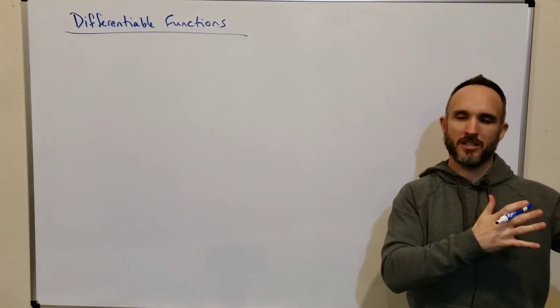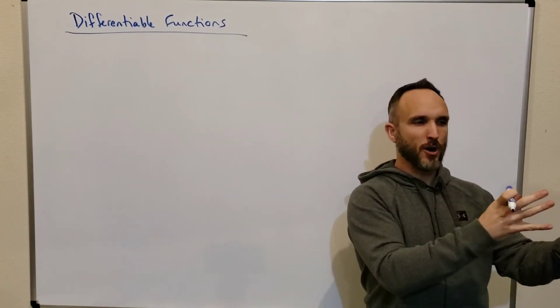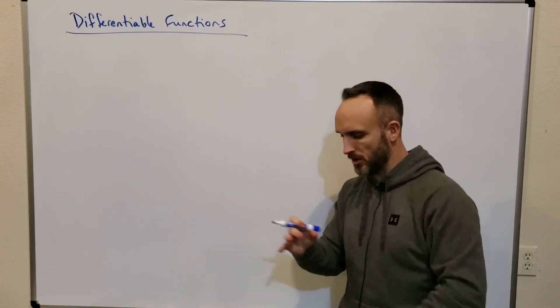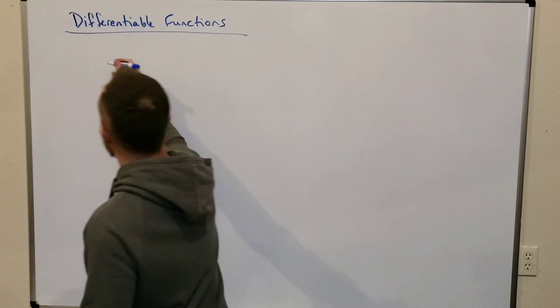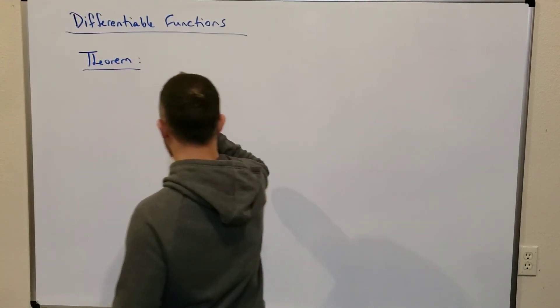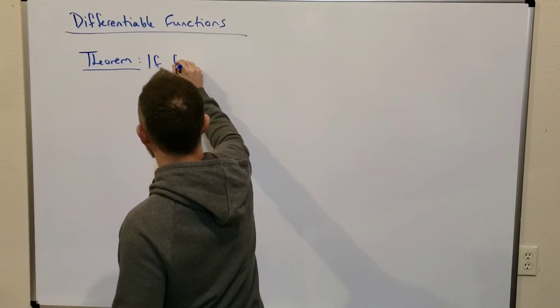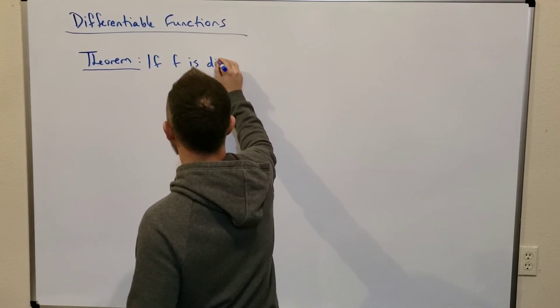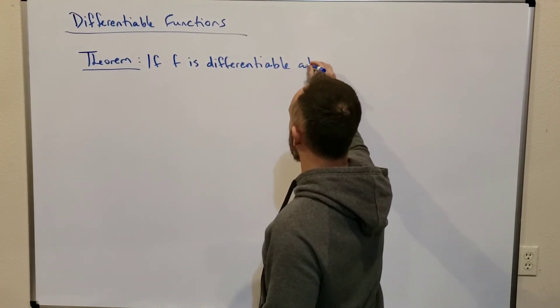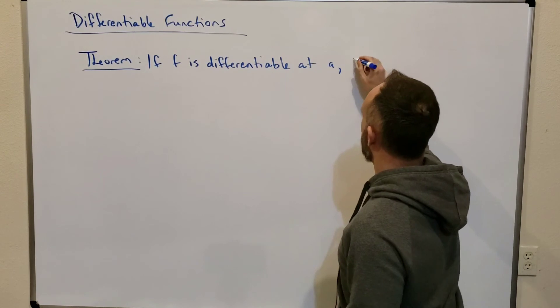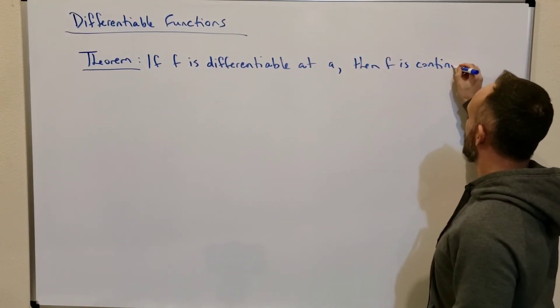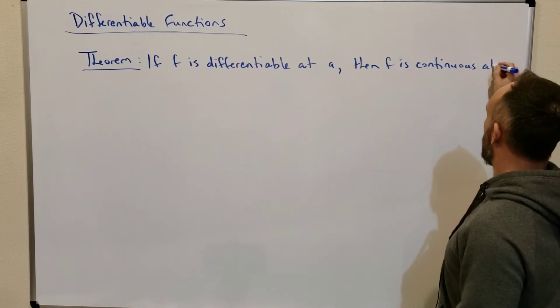We looked at continuity of functions, and now we're looking at differentiability of functions. The differentiable part is actually more strict than the continuous part, okay? So, that can help you kind of remember this theorem. This theorem says, if f is differentiable at a value a, then f is continuous at a.